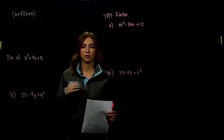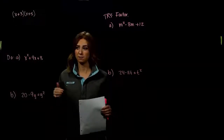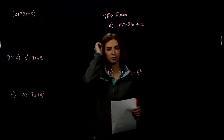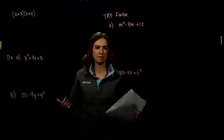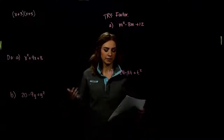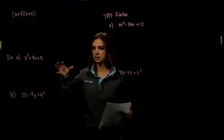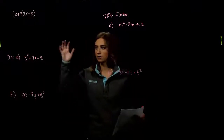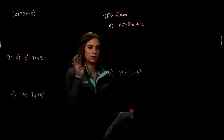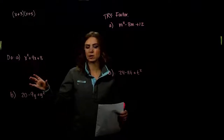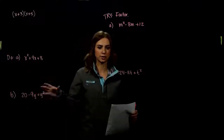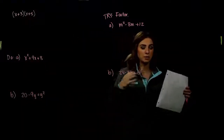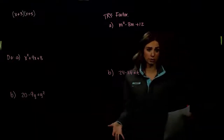Now that we can factor out the greatest common factor between some terms in a polynomial, we want to be able to break them down even farther. To factor means to take something and write it as a product. In all of these examples, we have addition or subtraction everywhere as our operations, but we want to break those down into multiplication.